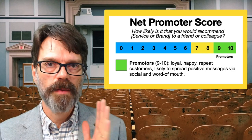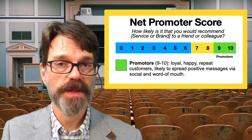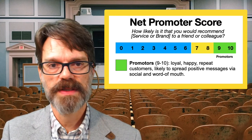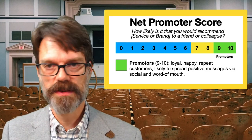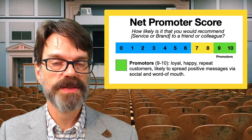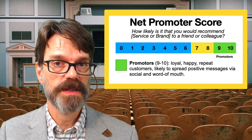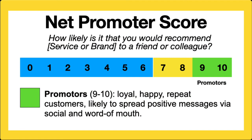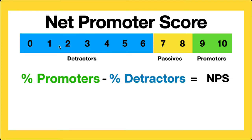Once we've divided up survey responses, we calculate the net promoter score, or NPS. This is a very common score — brands discuss their NPS scores at quarterly meetings and shareholder calls. The calculation is simple: we take the percentage of promoters and subtract the percentage of detractors. Notice that we leave the passives out of this equation. That doesn't mean they're unimportant or that we don't want to convert them into promoters — they're actually the most likely to become promoters — but they are excluded from the NPS calculation.